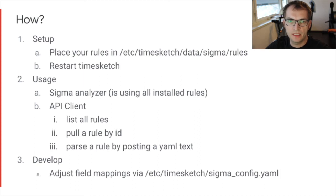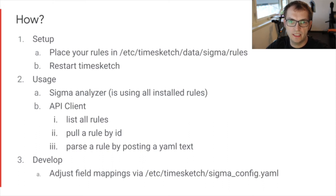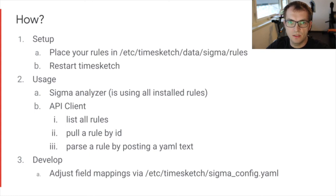The other option is to use the API client. There you can list all installed rules, pull a rule by rule ID, or pass a rule by posting a rule text as a YAML file. All of them will give you the parsed rule, including the Elasticsearch query. With that, you can explore and search in a sketch and so on.